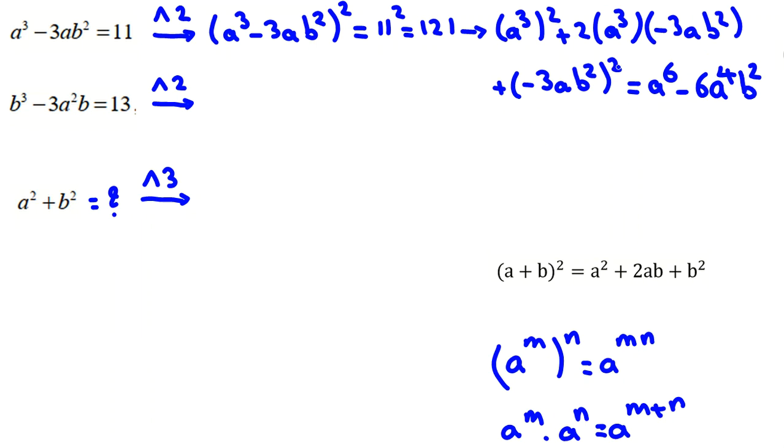And this part, negative will be canceled because we raise to the power of 2. Plus 9a²b⁴ = 121. So I erase these things and only write the last equation.